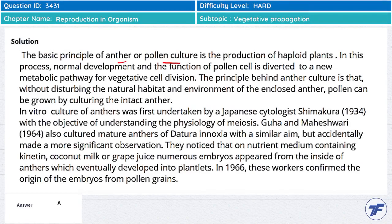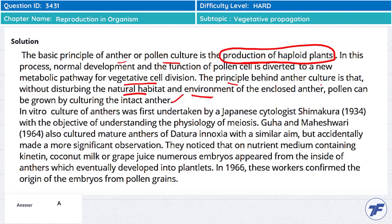The basic principle of anther or pollen culture is the production of haploid plants. In this process, the normal development and function of the pollen cell is diverted to a new metabolic pathway for vegetative cell division. Without disturbing the natural habitat and environment of the enclosed anther, pollen can be grown by culturing the intact anther.